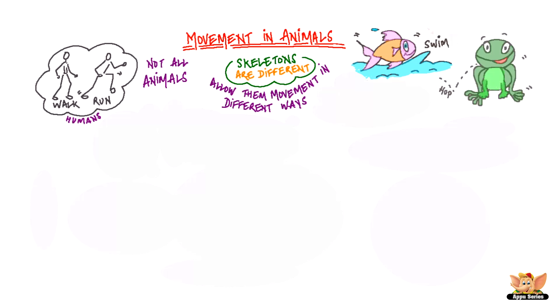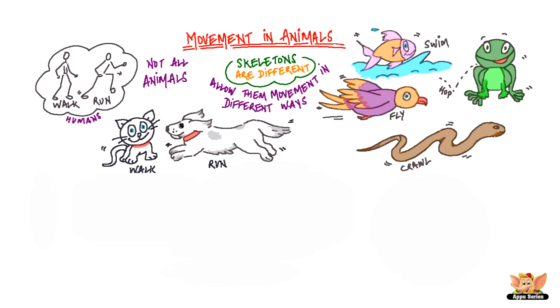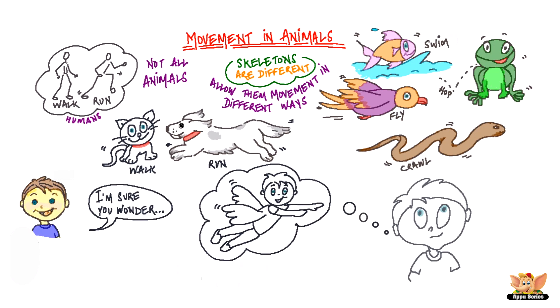Fish swim, frogs hop, birds fly, snakes crawl on the ground and dogs and cats walk and run. I'm sure you also wonder why birds fly while we can't or fish swim while the snake crawls. Let's see how different animals move in their own special way.